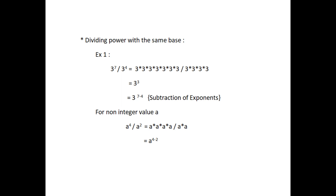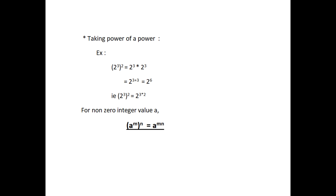Let a be the non-zero integer. Then a to the power 4 divided by a to the power 2 equals a to the power 4 minus 2. Next, taking the power of a power. Simplify 2 to the power 3 to the power 2, which means 2 power 3 to the power 2 equals 2 to the power 3 into 2 to the power 2, which equals 2 to the power 3 plus 3, which equals 2 to the power 6. For any non-zero integer a, where m and n are whole numbers, a to the power m to the power n equals a to the power mn.